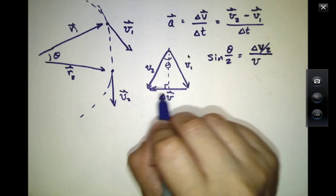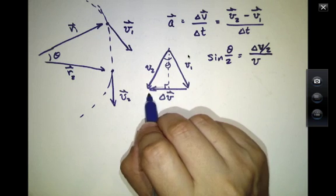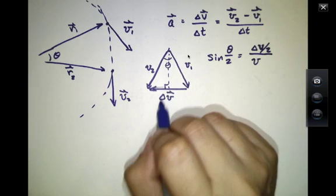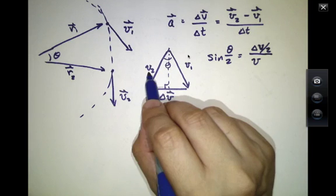So delta V is this entire length of the base of this triangle, of the bigger triangle. But the base of the small right triangle is delta V over 2. And that is length V.